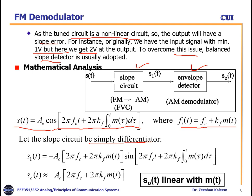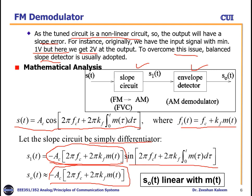When the FM signal passes through the differentiator, it differentiates s(t). After differentiation, we get a sinusoidal term with amplitude Ac·2π·(fc + kf·m(t)). Passing this through the envelope detector, we extract only the envelope — the amplitude term. The output s_out(t) is approximately linear with m(t), meaning we recover the original message signal.